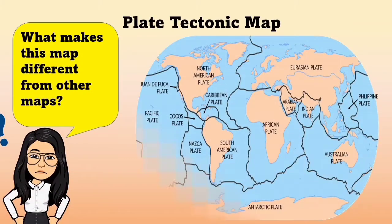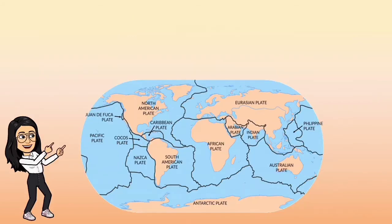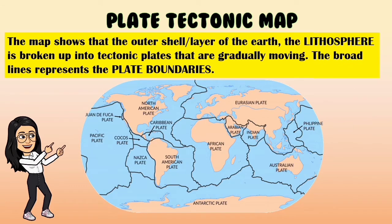Look at this picture. What makes this map different from other maps? This map shows the outer shell, or outer layer of the Earth, which is the lithosphere, broken up into tectonic plates. The broad lines represent the tectonic boundaries.